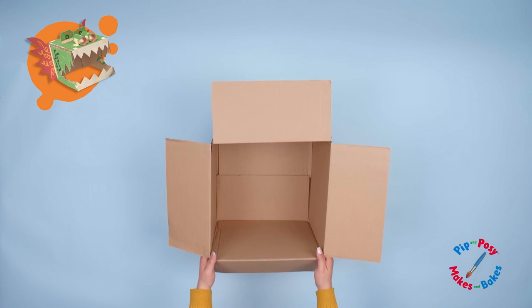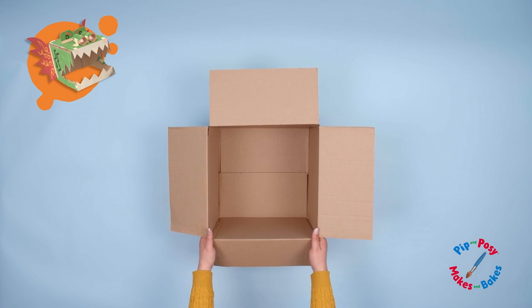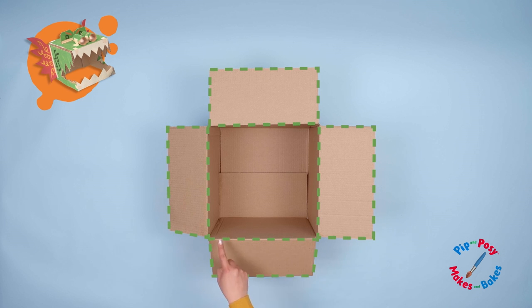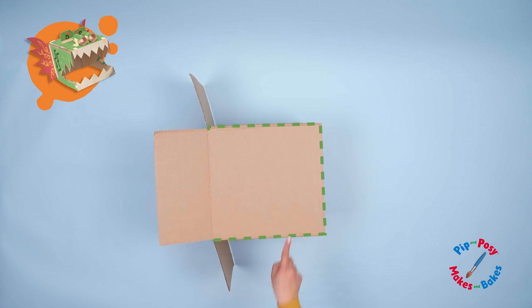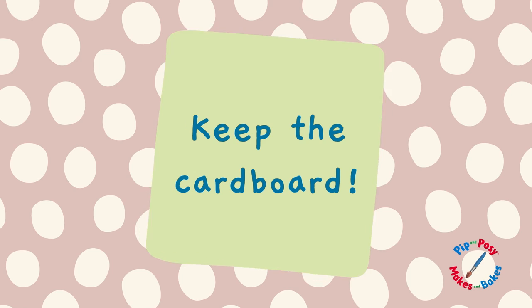Come on, let's make! Let's take our cardboard box. This is going to make the base of the dragon's head. We want to cut off these flappy bits and this side of the box. Don't throw these bits of cardboard away. We'll need these next time.